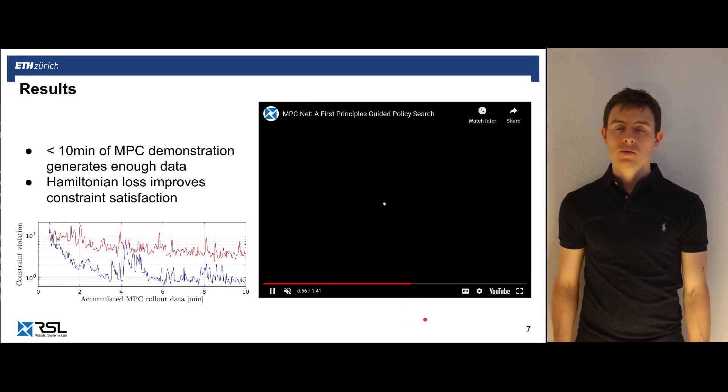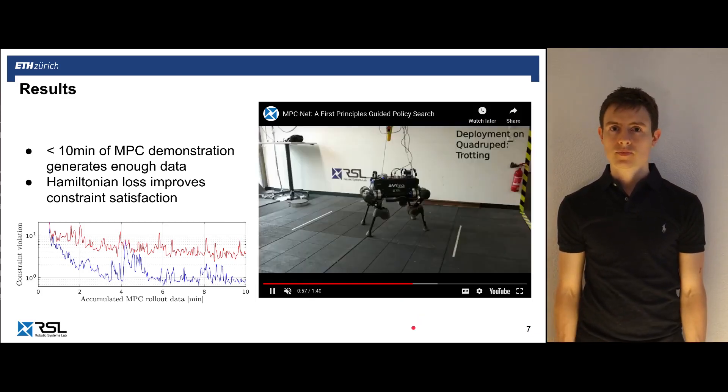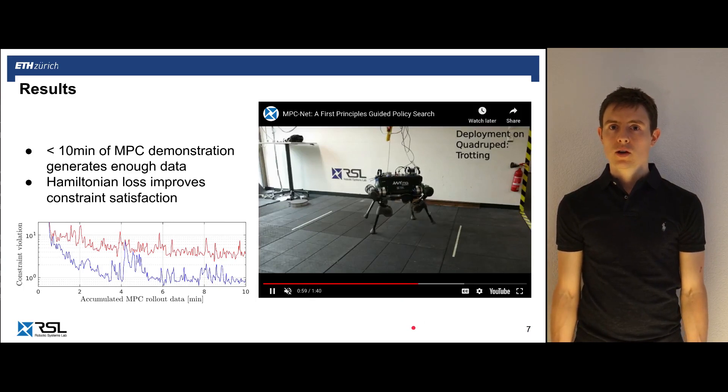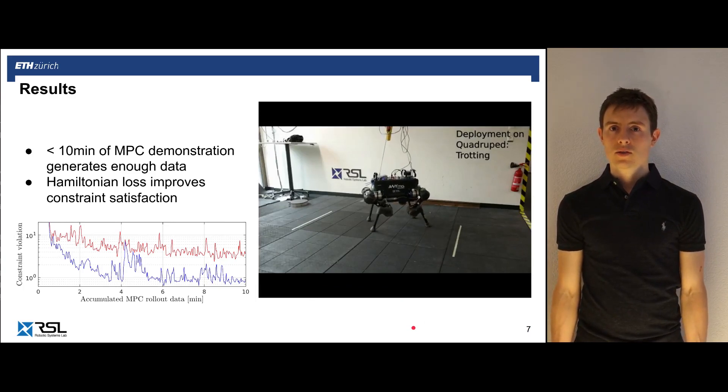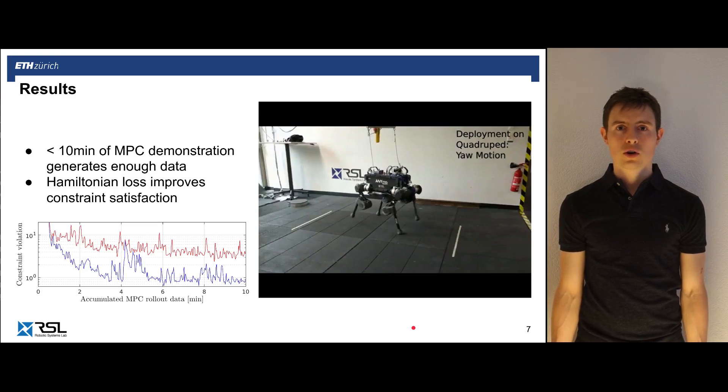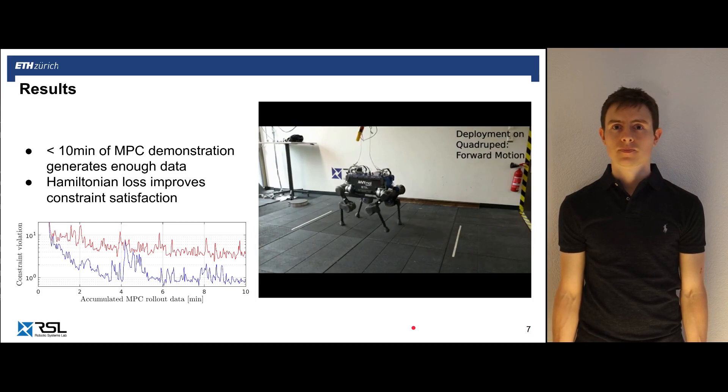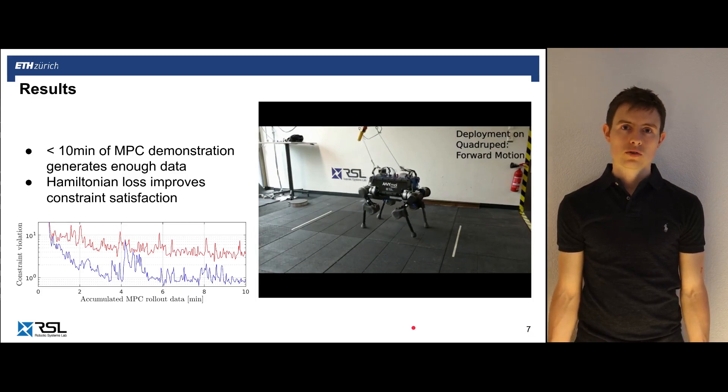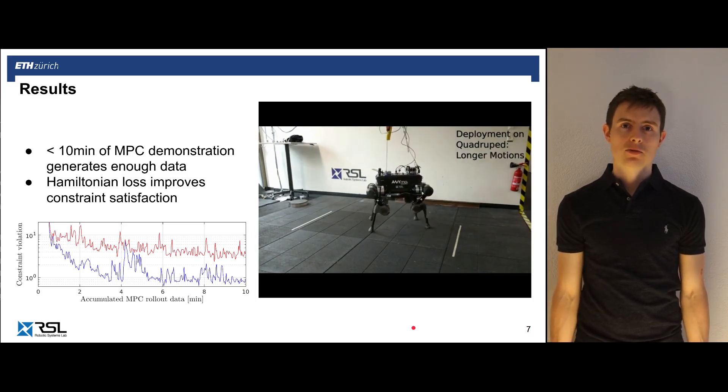In the video, we can see that it is possible to control different gaits such as trotting, walking gait, we can also command the robot to yaw around its axis, or to walk a couple of steps forward. Also, longer motions are possible to stabilize with our learned controller.